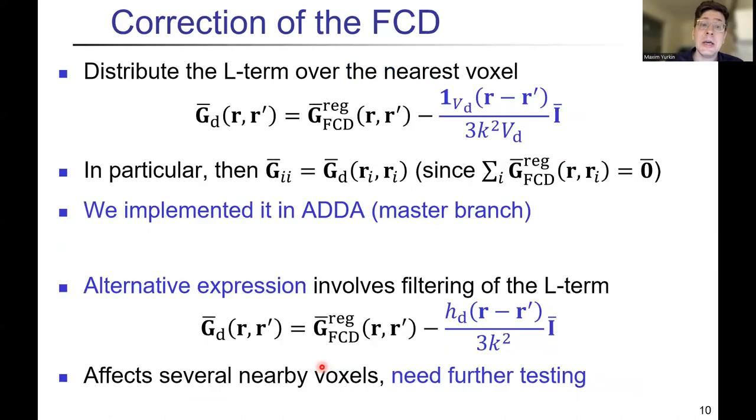This continuous consistency is much more stringent than discrete consistency, and it's not automatically satisfied by many of the DDA formulations. For IGT, it is satisfied. If we go to FCD, it actually can be easily made to satisfy, and the correction just has the same self-term as we had in the IGT. That's actually a natural way to add it, and it's strange that we did not have it before. We implemented it in ADDA. There's also an alternative expression that can be used.